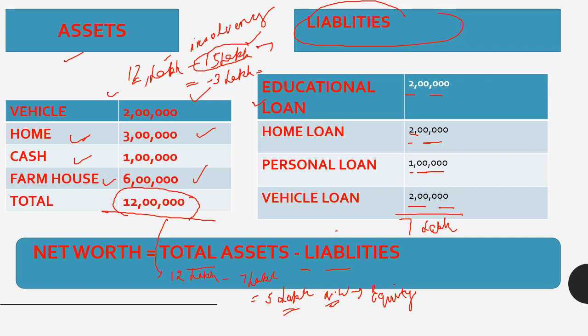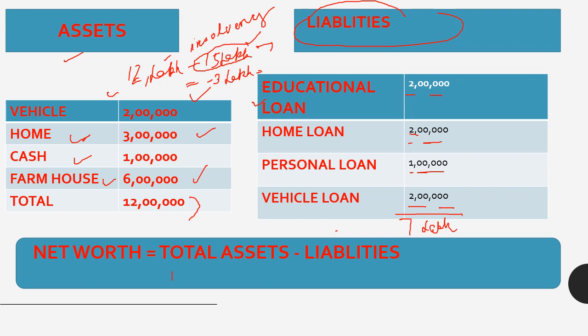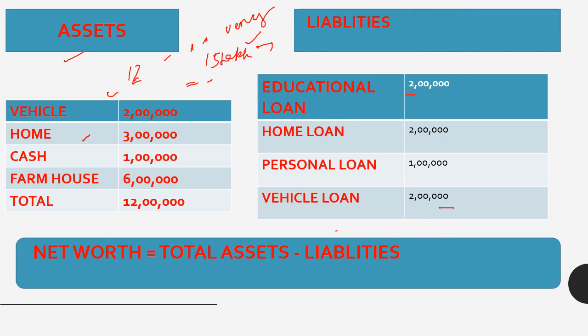So solvency is the overall financial position. Now let's discuss liquidity. Liquidity is a different concept — let me take another example to explain it. Assets are all the things you own and liabilities are all the loans you have taken.